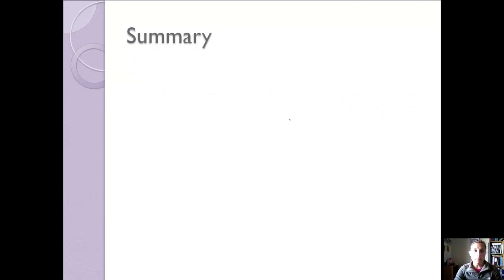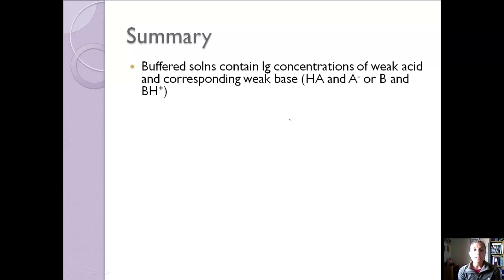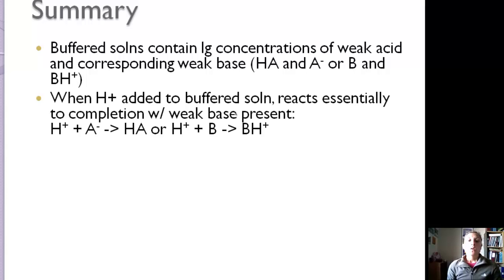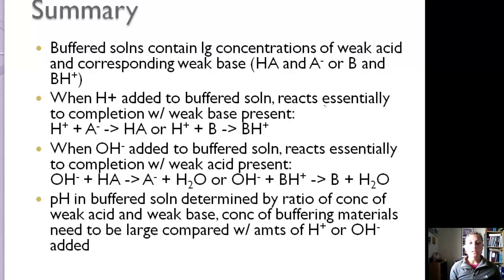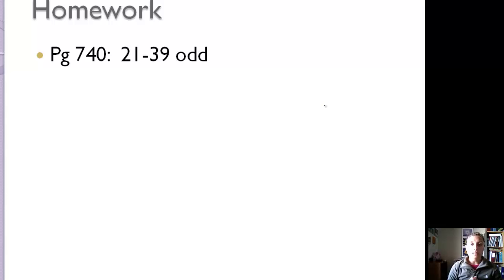We'll go over examples of weak bases in class. Here's a summary: buffered solutions contain large concentrations of a weak acid and the corresponding weak base — either a weak acid and its conjugate base, or a weak base and its conjugate acid. When H⁺ is added, it reacts essentially to completion with the weak base: H⁺ plus A⁻ gives HA, or H⁺ plus B gives BH⁺. When OH⁻ is added, it also reacts essentially to completion. The pH is determined by the ratio of weak acid to weak base, and the buffering material concentrations must be large compared to the H⁺ or OH⁻ added. Here are problems to work on and we'll discuss more examples in class.